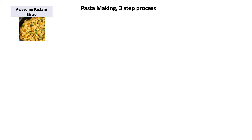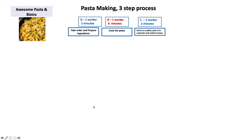Let's consider a small pasta shop called Awesome Pasta Bistro. During lunchtime, customers come and queue up. The pasta making has three steps. The first step is where the customer places the order — there is one worker who takes the order and prepares the ingredients, taking two minutes. The second step is the cooking of the pasta, where one worker cooks it and it takes six minutes.